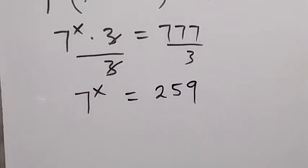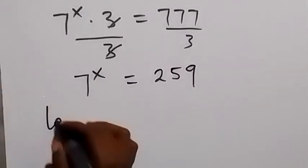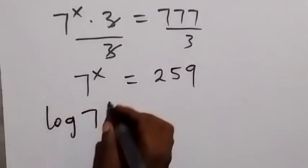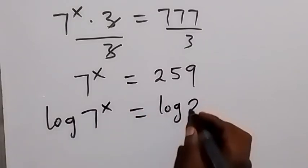And in the next step, let's take the log on both sides. So the log on this side gives us log 7 raised to the power x and here we have log 259.